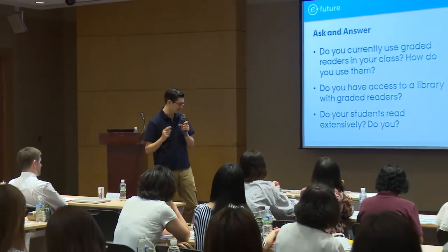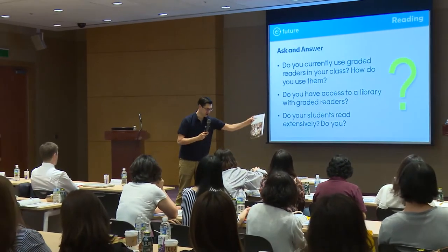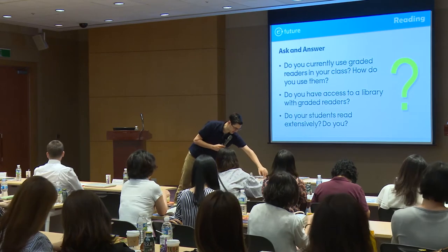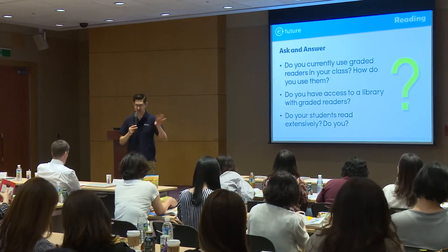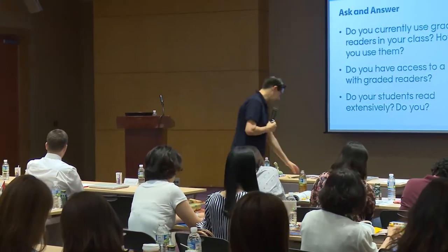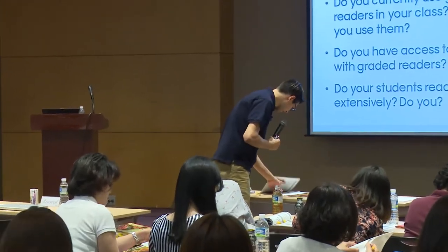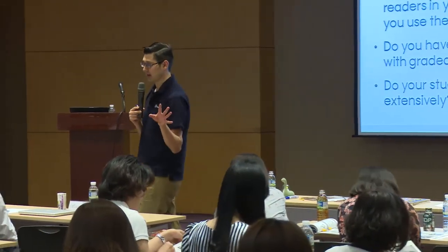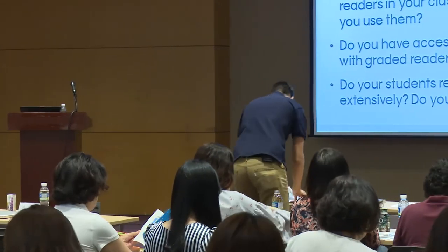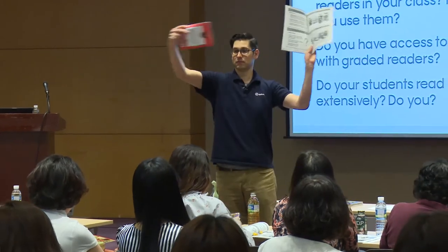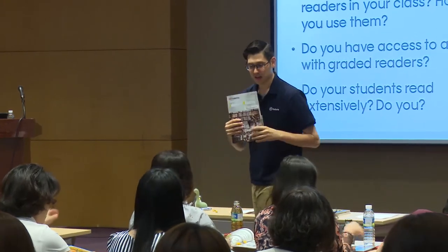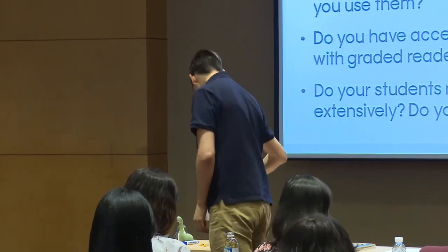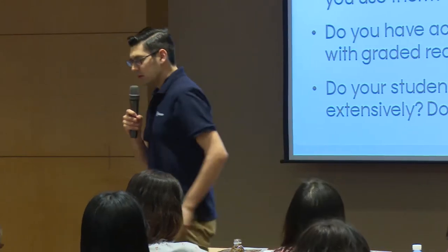Before we continue, I want you to do one thing. In your book, take one of the graded readers that you have, go to page 39 and cover the bottom of page 39. Just stick your graded reader in there — sort of like this. We'll use this later; just cover up the bottom panel.